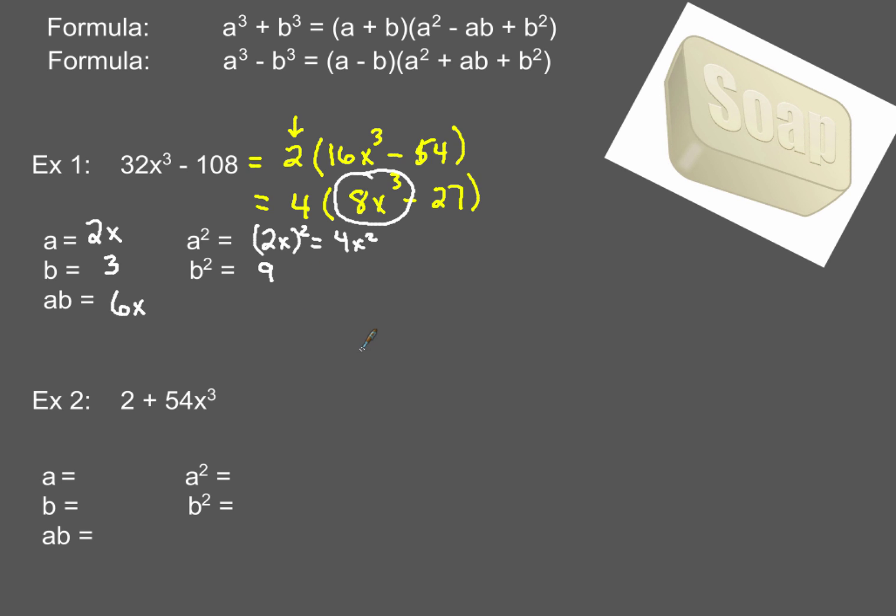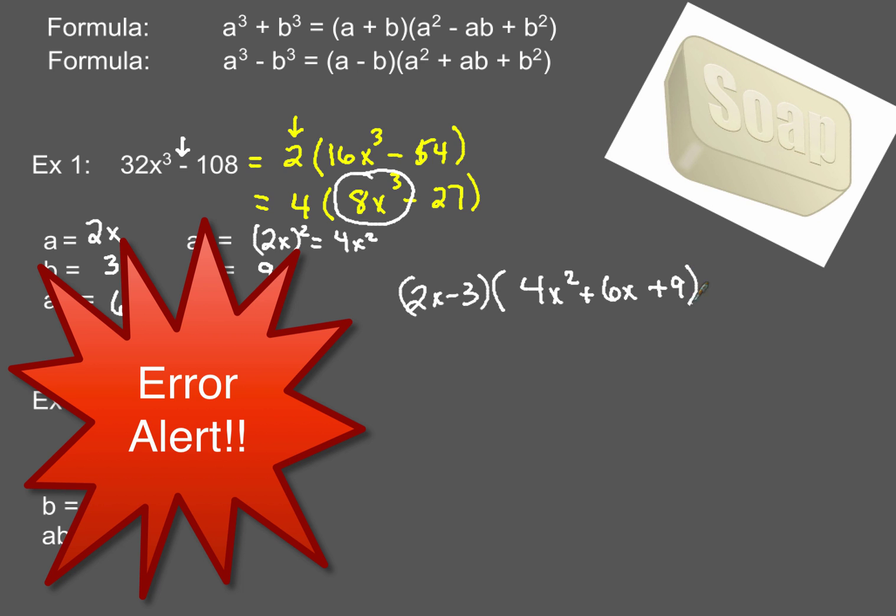Now, all we do simply after that is plug that into our formula. Now, the two formulas, what I want to do is look right here at the given problem that has a minus in it. So, that means I'm going to start out with 2x minus 3. From there, I'm going to go ahead and plug in the rest of the pieces for the formula. So, my a squared term, of course, that's my 4x squared, and my ab term is going to be 6x. So, it's going to be plus 6x. And then, the last term is going to be my b squared, which is plus 9.